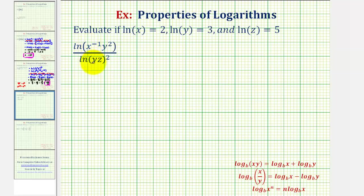We want to evaluate the given expression if natural log x equals two, natural log y equals three, and natural log z equals five.